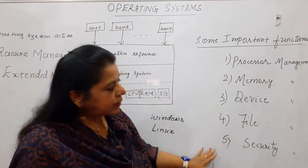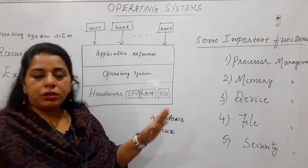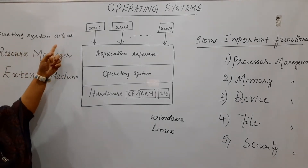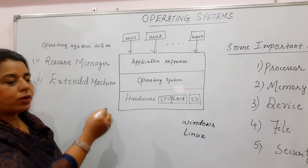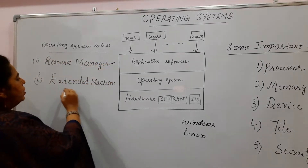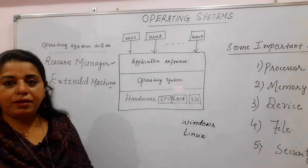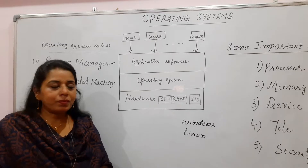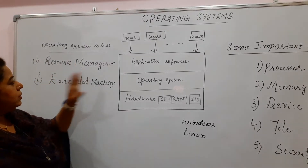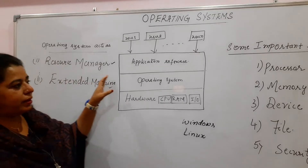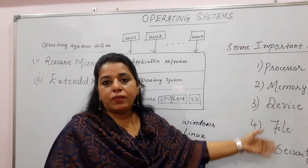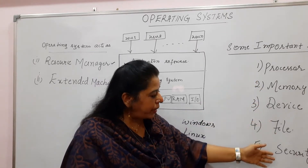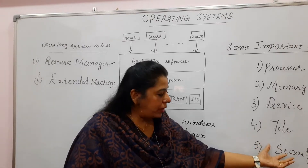To understand the functions of the operating system, the simplest way is to explain these two key points: the operating system acts as a resource manager, and the operating system acts as an extended machine. The explanation for the operating system as a resource manager covers all its functionalities: processor management, memory management, device management, file management, and also an important activity called the security aspect.